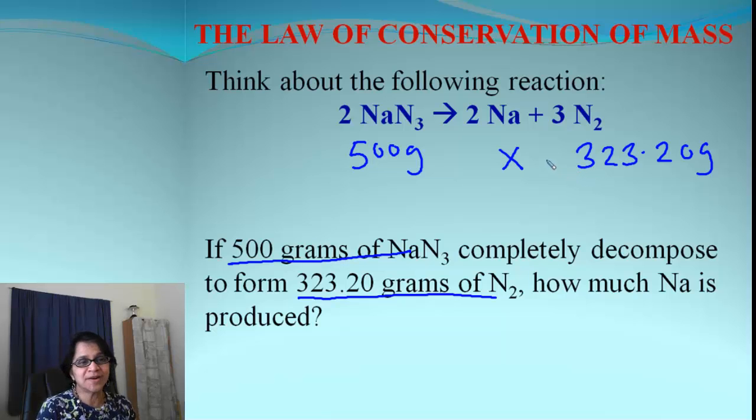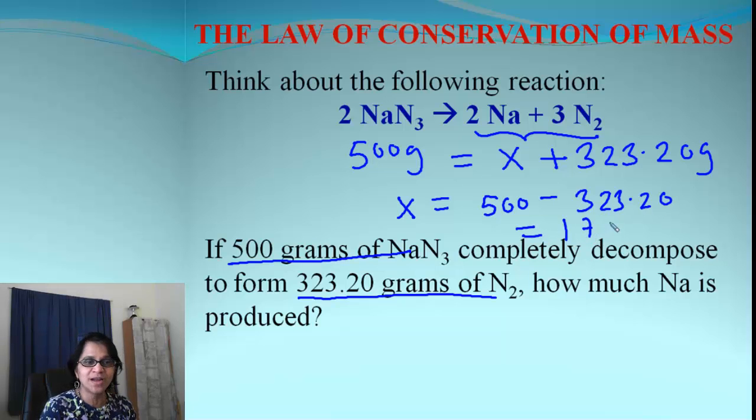So we don't know how much is sodium, which let us say is X. According to our law, when we add the masses for these two, that must equal the mass before we did the reaction. Now it is simple algebra and you can find out X will be 500 minus 323.20, which comes out to be 176.8 grams.